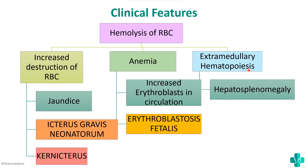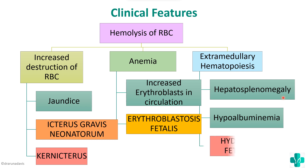Because of extramedullary hematopoiesis, there can be hepatosplenomegaly, which leads to decreased liver function, causing hypoalbuminemia. Hypoalbuminemia results in edema for the fetus, known as hydrops fetalis. Based on severity: mild anemia presents as erythroblastosis fetalis; slightly more severe causes icterus gravis neonatorum; more severe causes kernicterus; and the most severe causes hydrops fetalis, and the fetus may die.